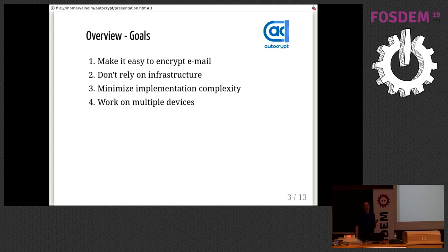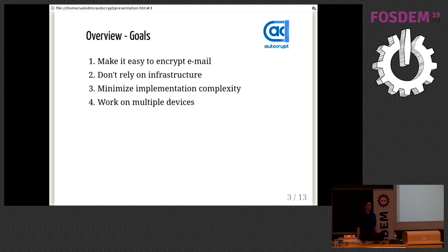Second thing is don't rely on any infrastructure. As soon as you depend on infrastructure, there are just many, many moving parts. We don't want to use key servers. We don't want to rely on any support from the email provider to be able to encrypt, or any other outside influence. We just want it to work if the email clients can do it. And the fourth thing is it should work on multiple devices, because people do use multiple devices in their daily email workflows. We try to keep things as simple and separate as possible and avoid the requirement of synchronization between different email clients from the same user.